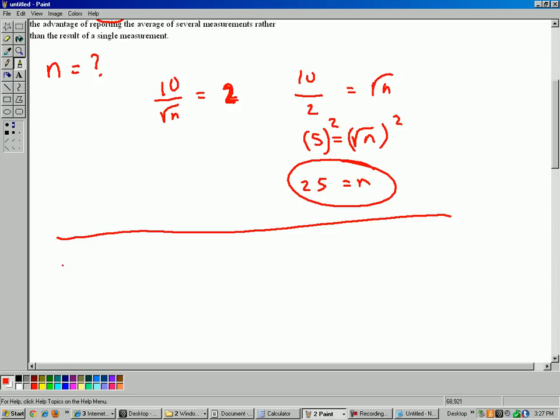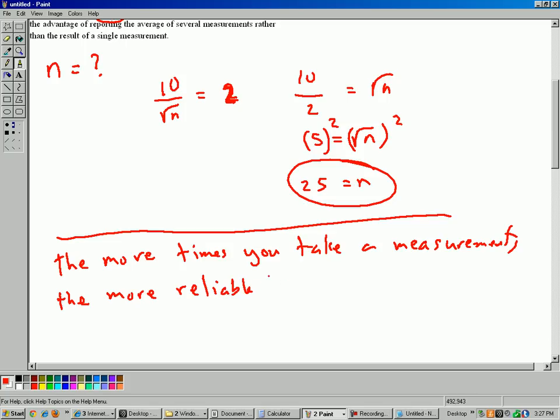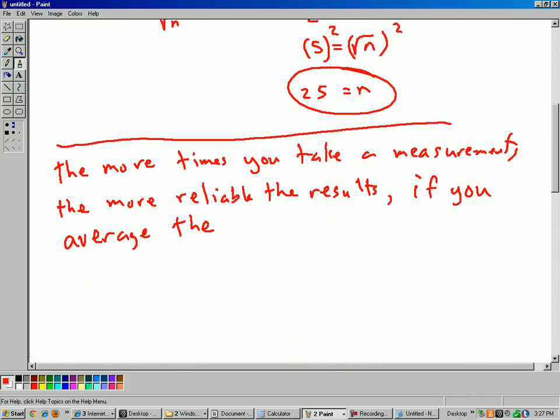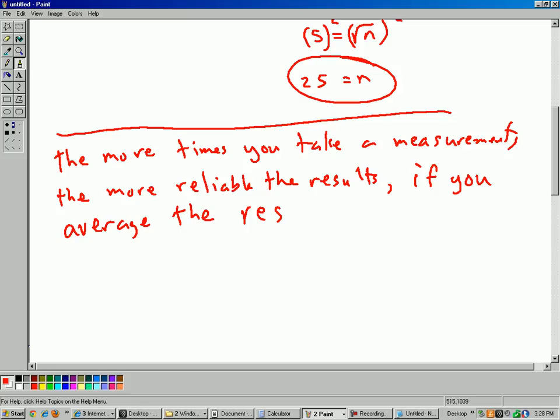So in other words, the more times you take a measurement, the more reliable the results if you average them together. This is probably a run-on sentence, but you get the idea. If you average the results. Now we're not supposed to explain this using statistics because it says in the directions, explain to someone who knows no statistics, that we're not supposed to use words like standard deviation and things like that. So if you average the results.